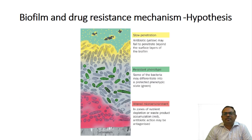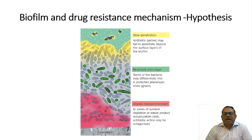There are various hypotheses which have been postulated for drug resistance mechanisms inside a biofilm. The three common ones are: slow penetration, resistant phenotype, and altered microenvironment.